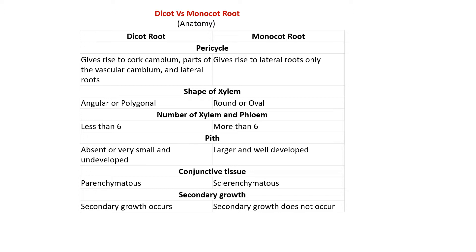The first difference is in the pericycle. In the case of dicot root, the pericycle gives rise to cork cambium, parts of vascular cambium, and lateral roots. So generally, in dicot root, the pericycle plays a very important role in secondary growth and also in the development of lateral roots. While in the case of monocots, it only gives rise to lateral roots. This is the first difference.